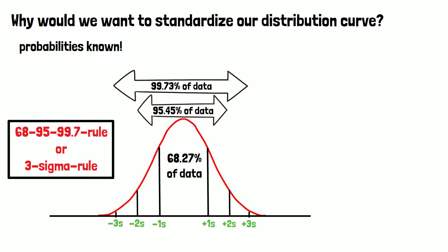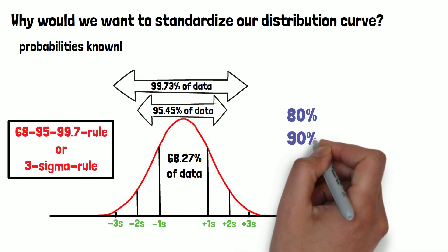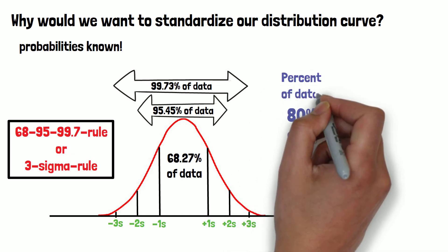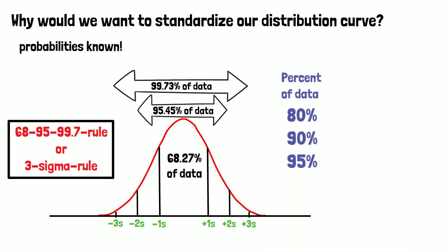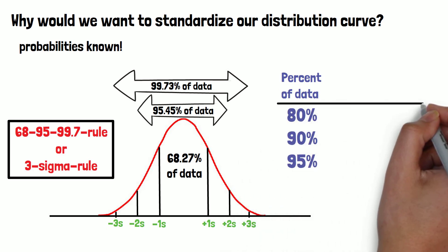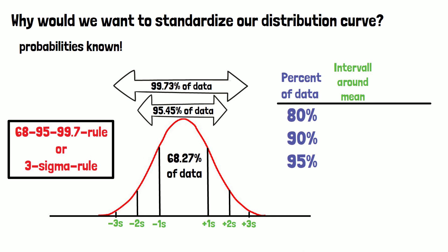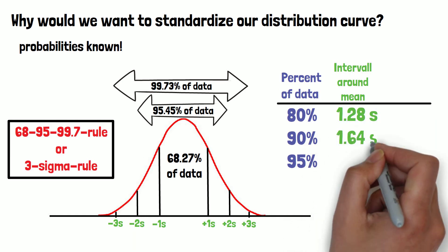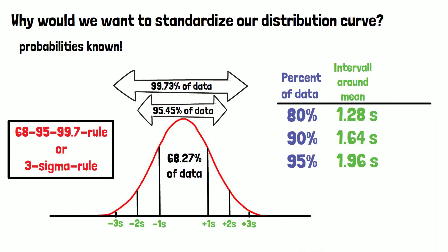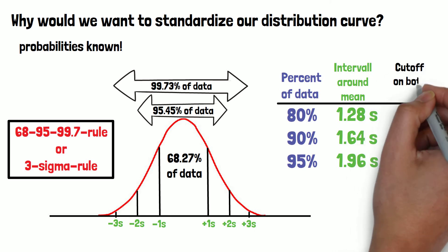The other way around, we could also ask in which interval do 80, 90, and 95% of the data lie, since these are the most common values in the analysis of clinical trial data. The interval around the mean is 1.28, 1.64, and 1.96 sigma, respectively, when the cutoff is always applied on both sides.